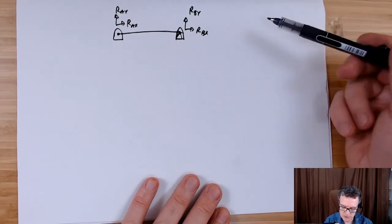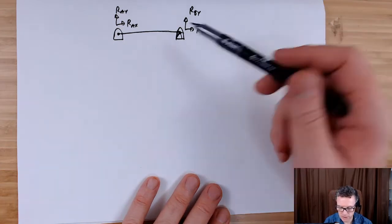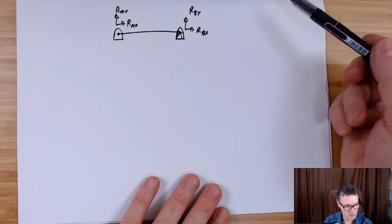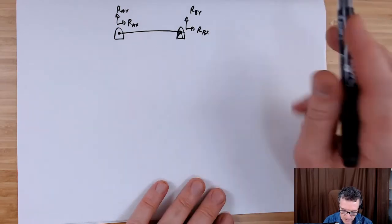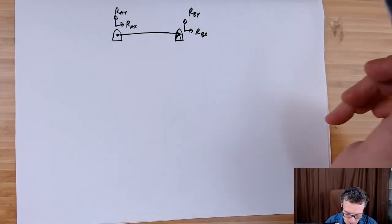Forces in the y direction - that's two equations, and I can take moments. So I've got three equations I can use for this body. However, I've got four unknowns, so this problem becomes indeterminate, can't be solved.